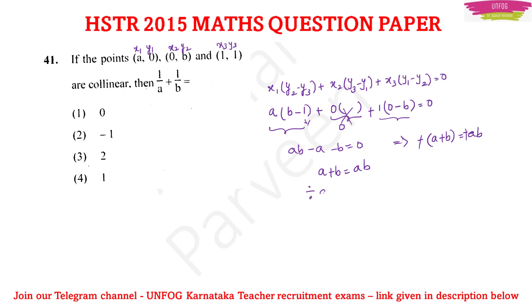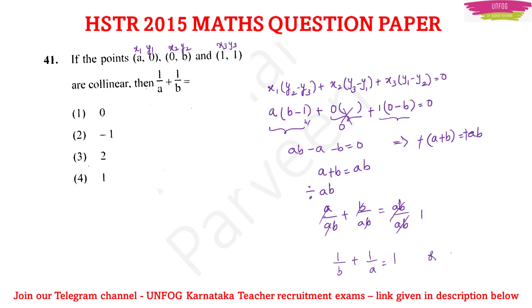Dividing both sides by ab: a/ab + b/ab = ab/ab, which simplifies to 1/b + 1/a = 1, or 1/a + 1/b = 1. So option 4 is the correct answer.